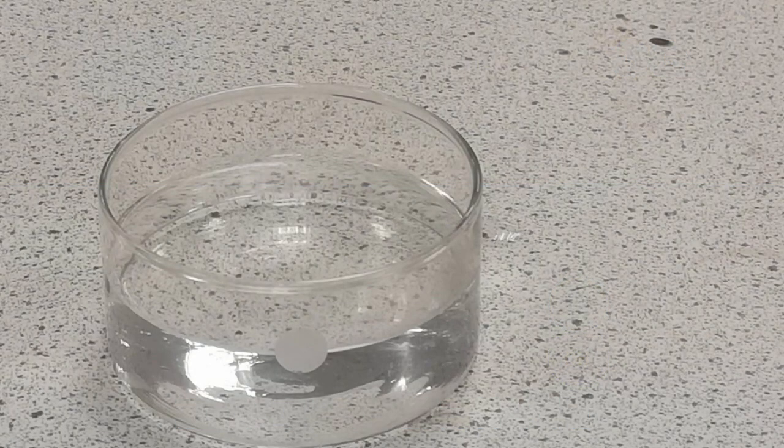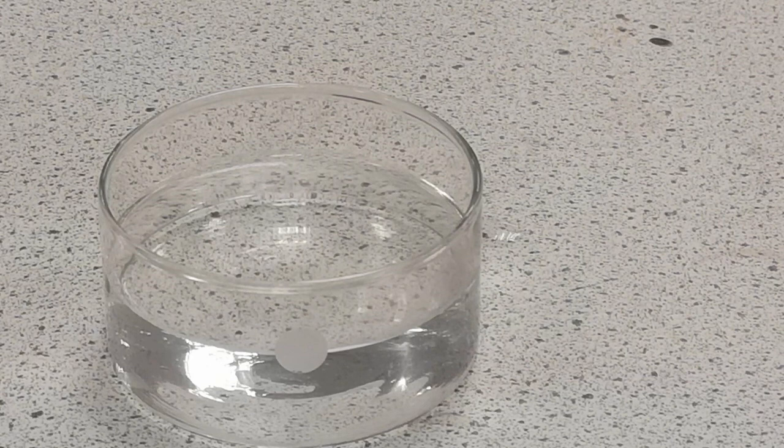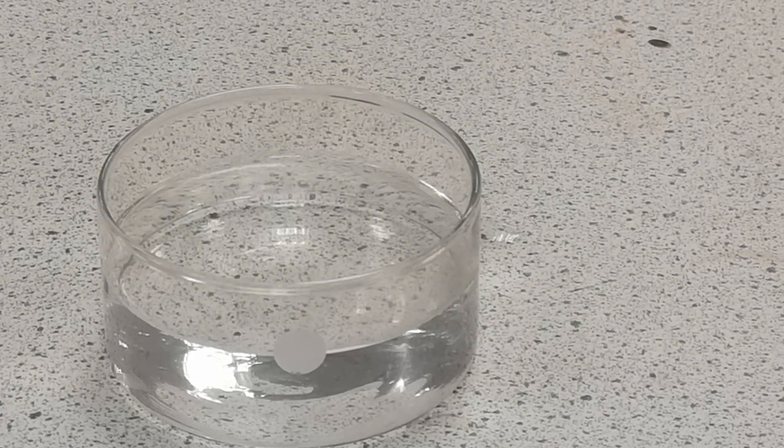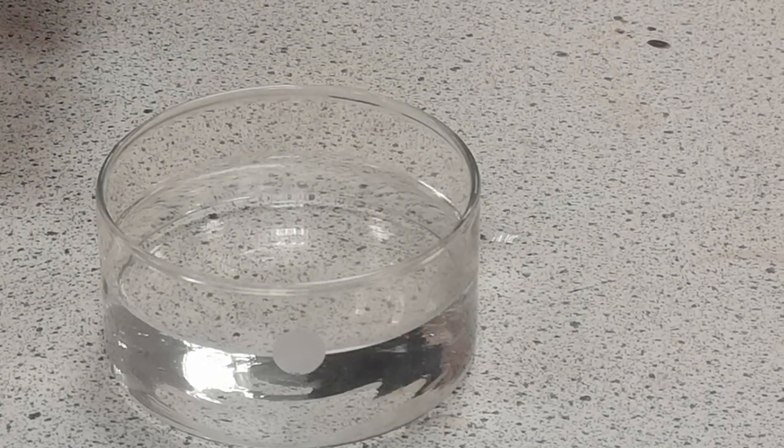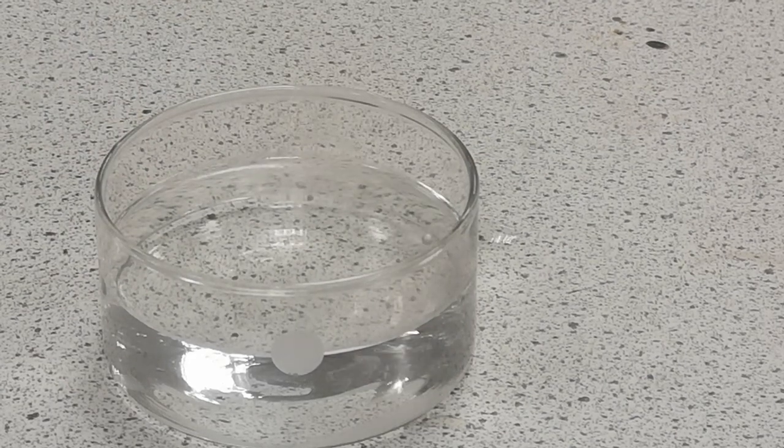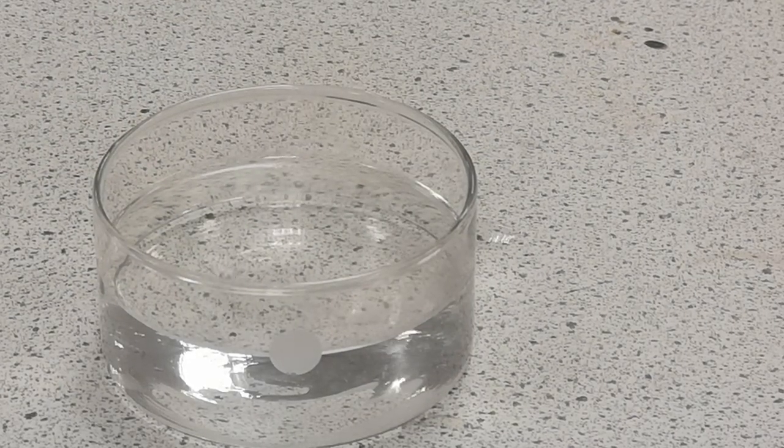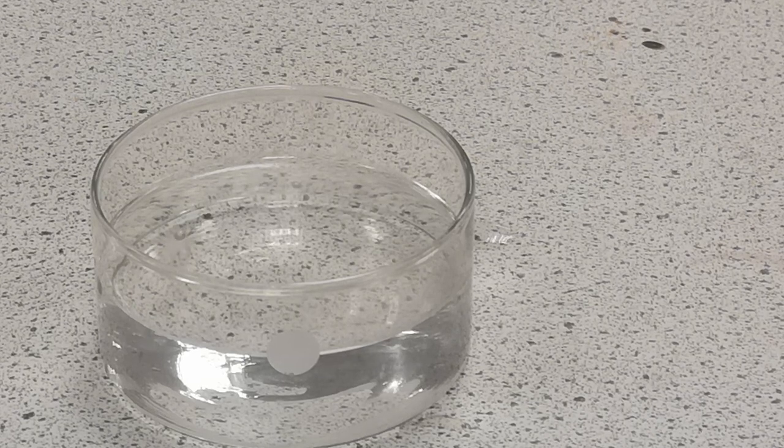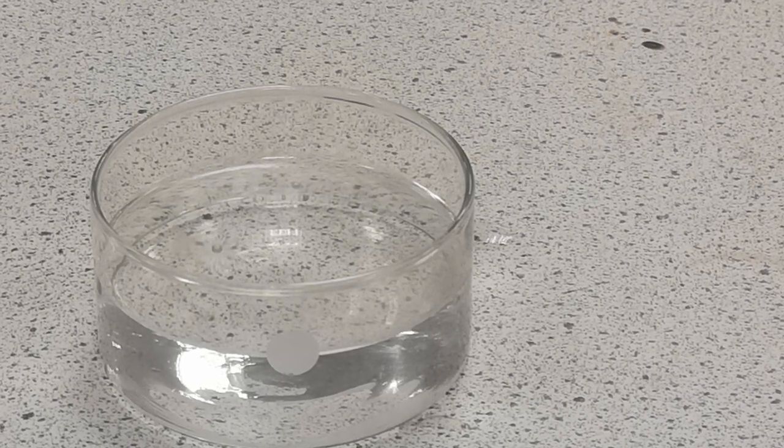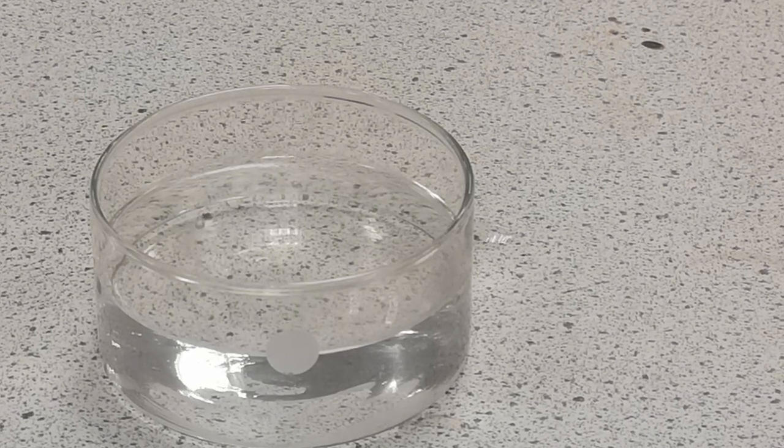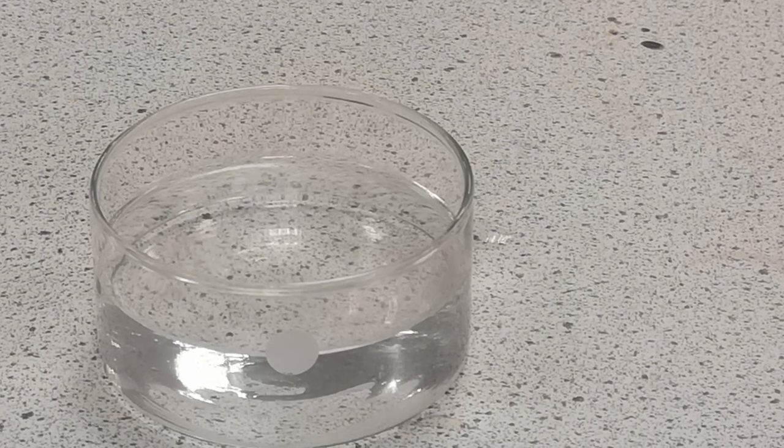The second metal is sodium. This is more reactive than lithium, again producing hydrogen and the hydroxide, but it also has a lower melting point and this time the heat of the reaction is enough to cause it to melt and you can clearly see a spherical blob of molten sodium whizzing around on the surface.